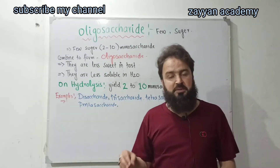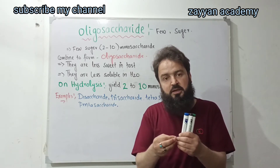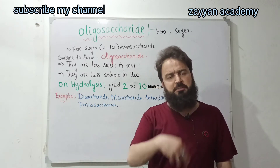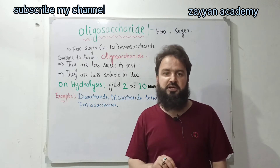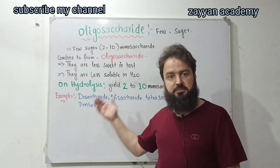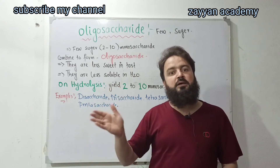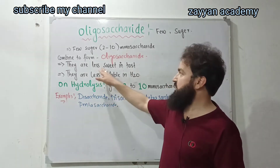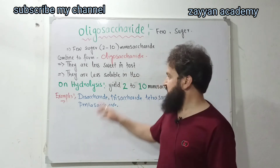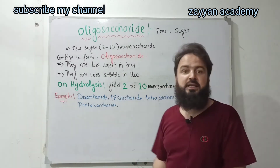They are less soluble in water. Glucose is called oligosaccharide or disaccharide. It is less soluble as compared to monosaccharide.